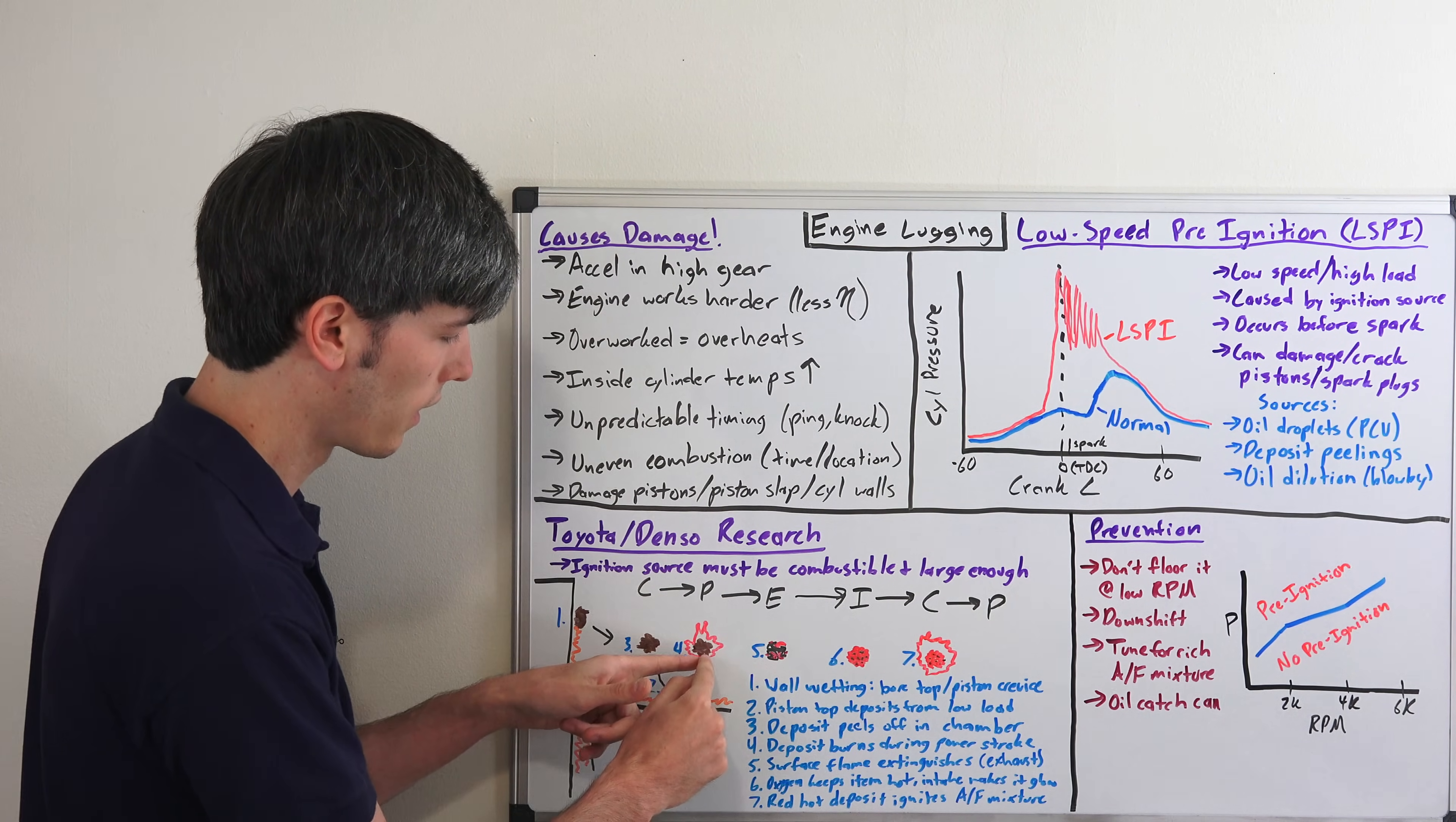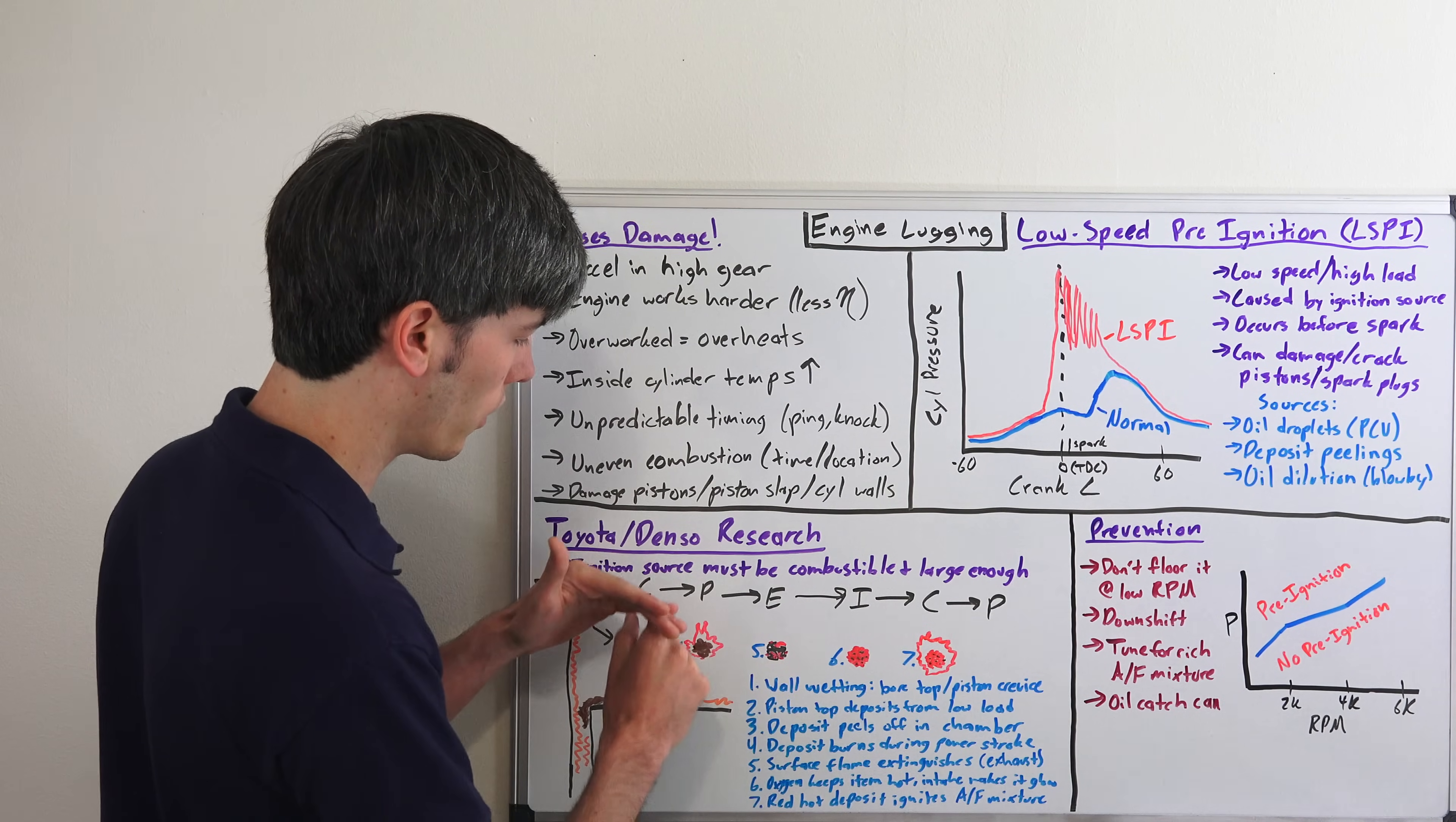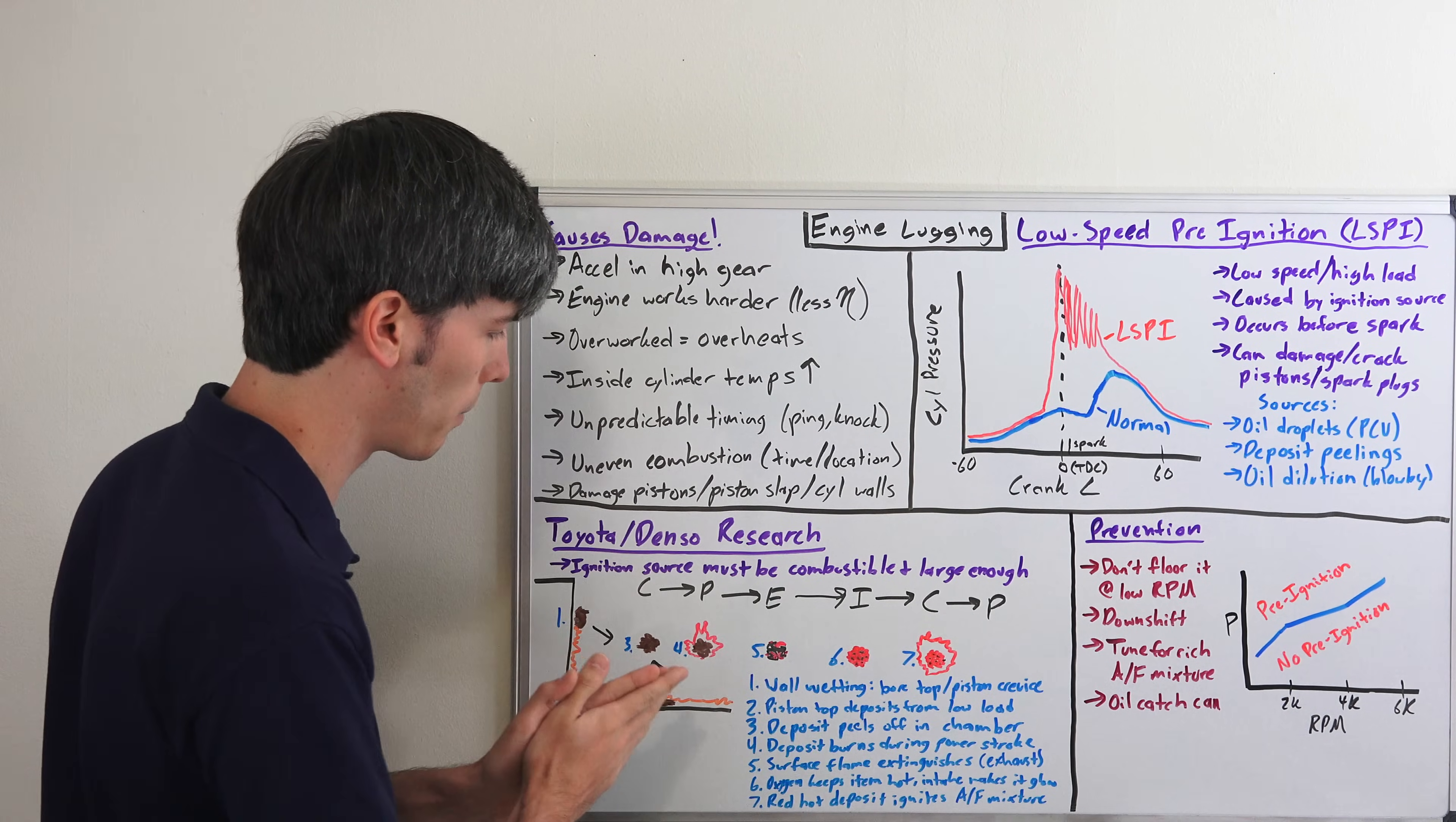It ignites this and you have a surface flame that's on this deposit. Then of course during your exhaust stroke, the deposit doesn't make it out the exhaust, so it remains in the chamber. Let's just say for this example - of course it could go out the exhaust and then you wouldn't have this problem.